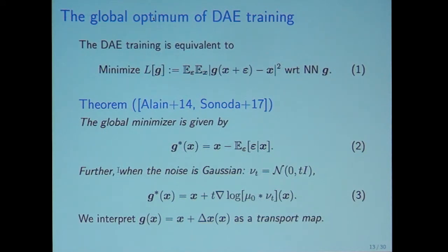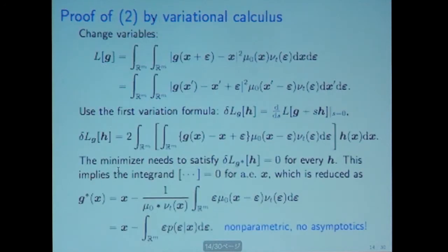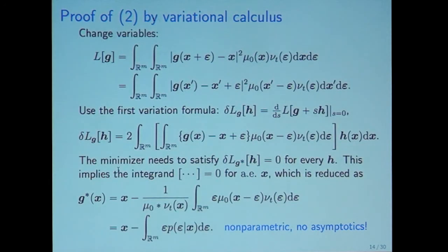Both equations in two and three have a form that x plus something, right? So we regard this as a transport map. This is a short proof.